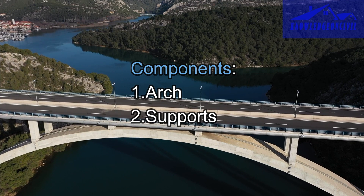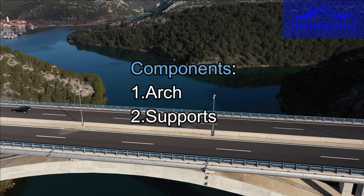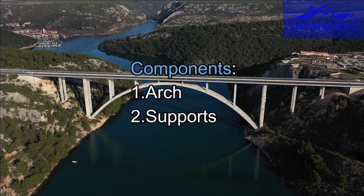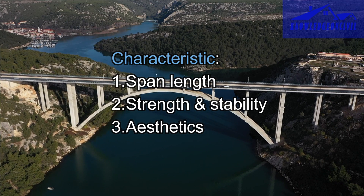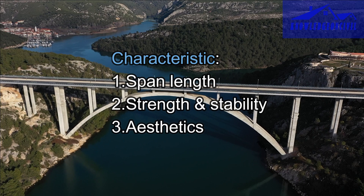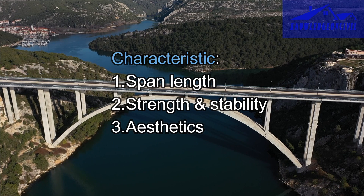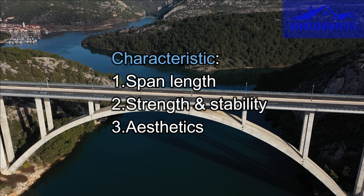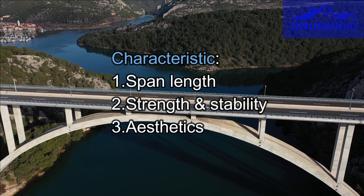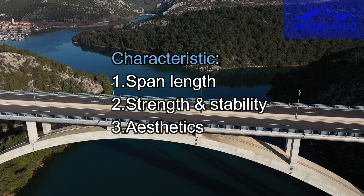Arch bridges have supports at each end in the form of piers or abutments. They are known for their ability to span longer distances than many other bridge types, making them ideal for crossing wide rivers, valleys, and other obstacles. The curved arch shape efficiently distributes forces, making arch bridges strong and stable — they can handle heavy loads without the need for additional support in the center. They are often appreciated for their graceful and elegant appearance and valued as architectural landmarks.